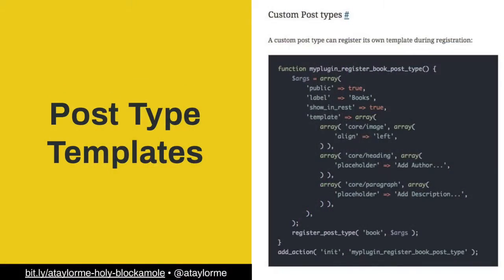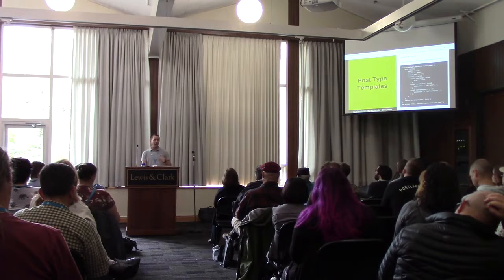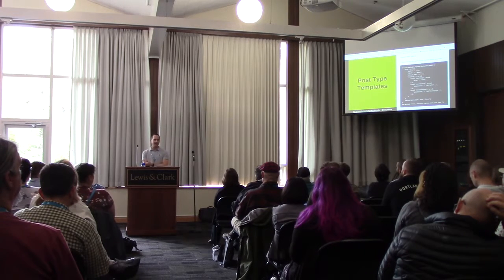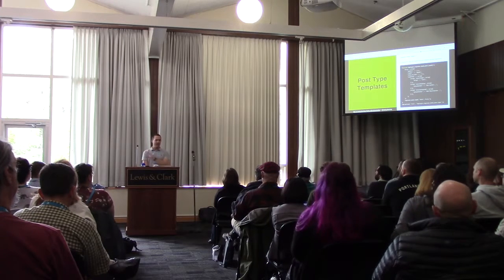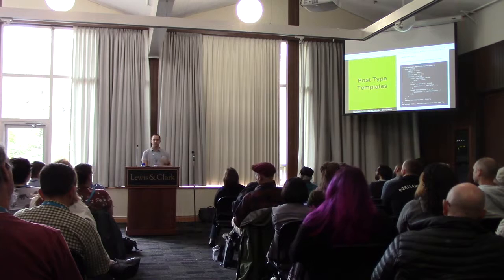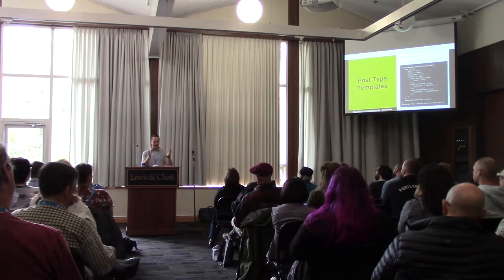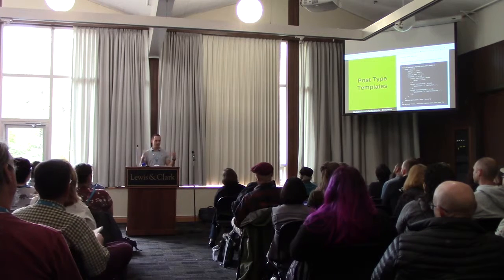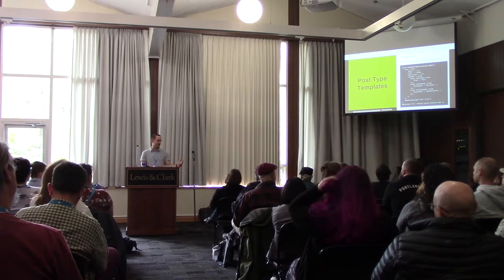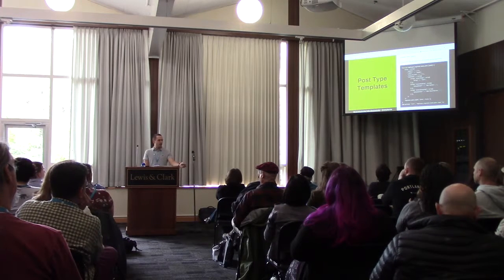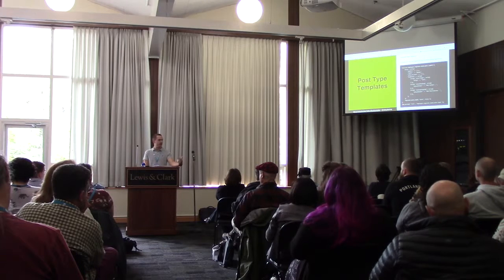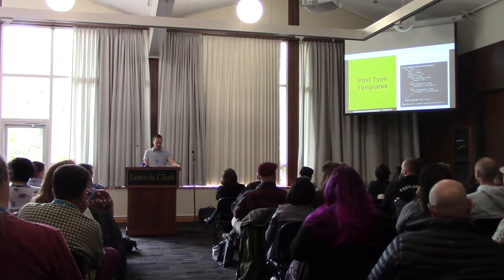Along those same lines, there are post type templates. Rather than clicking create new post type for a recipe, you can already have a title, an image, and ingredients blocks in there as placeholders. You can even lock that down — for a team members post type, you want an image, a bio, and a job title, and that's it. You can lock those down so that no matter who goes in to create a team member, there's no wrong way to do it, and nobody can add extra blocks that break the consistency.